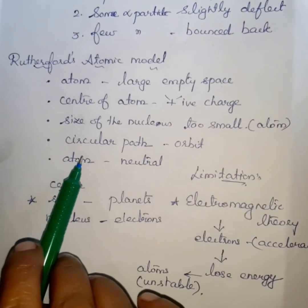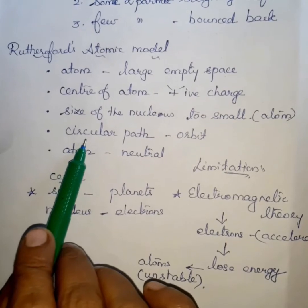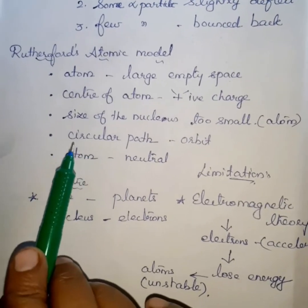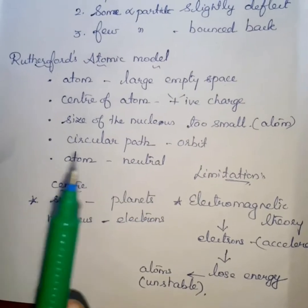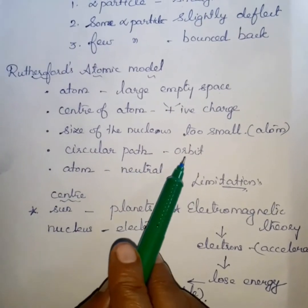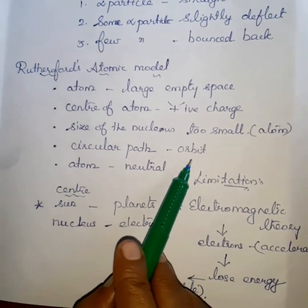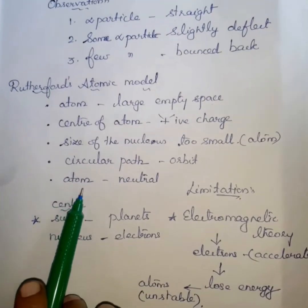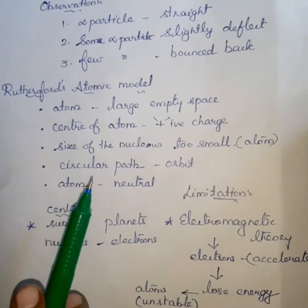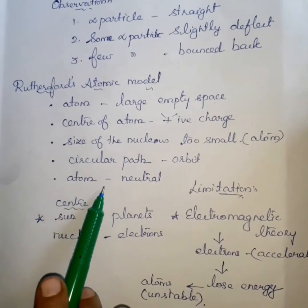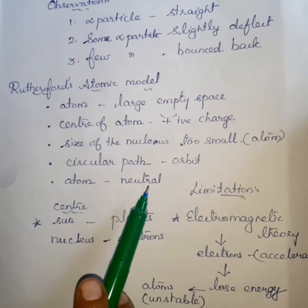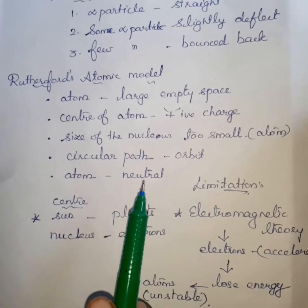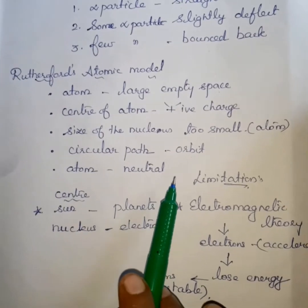Fourth point: the electrons revolve around the nucleus in a closed circular path, called an orbit. Fifth point: the atom is electrically neutral because it has the same number of protons and electrons.